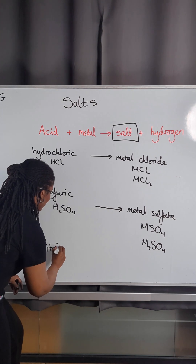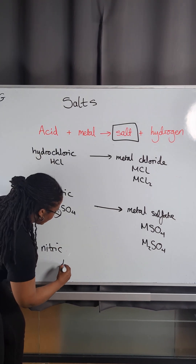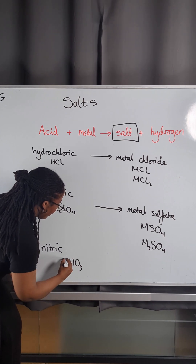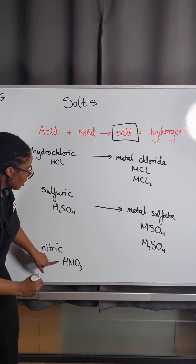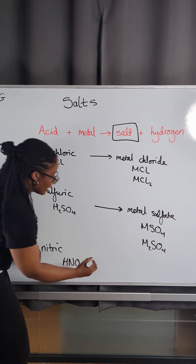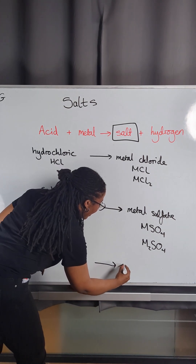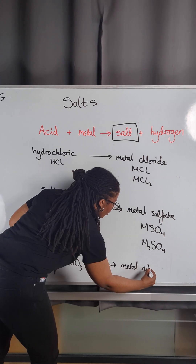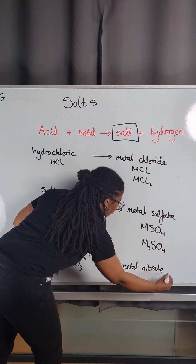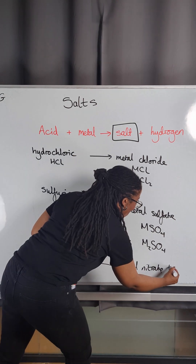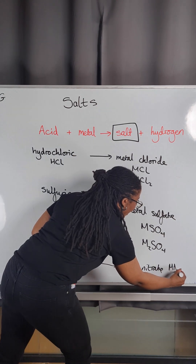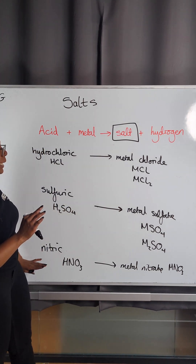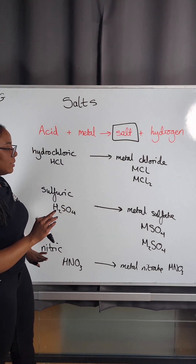So if we were to use nitric acid, which is HNO₃, then replacing the H in the nitric acid, our salt would be a metal nitrate of the form MNO₃ or M(NO₃)₂. I have completely run out of space!